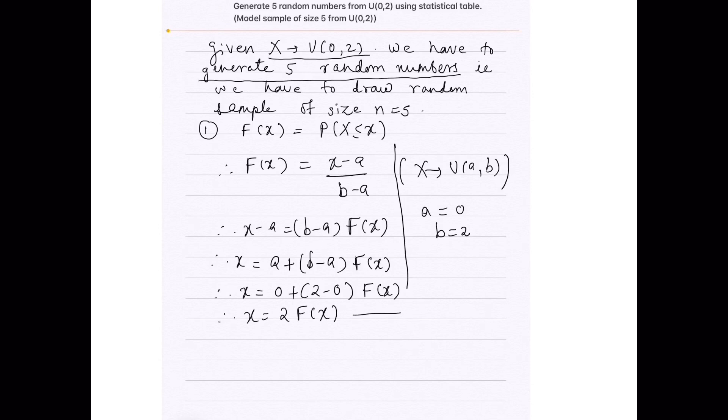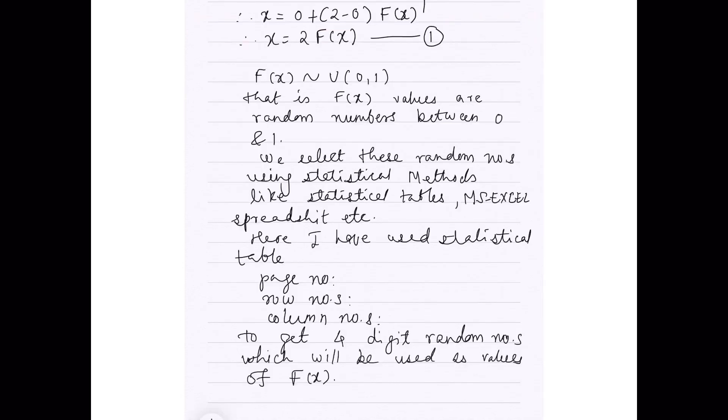This equation serves as a formula for x to get the random numbers. x of size 5 means we are drawing 5 numbers from uniform 0 to 2. So, once we get the values of F(x), we can get the answers for x. Now, how to get the values of F(x)?